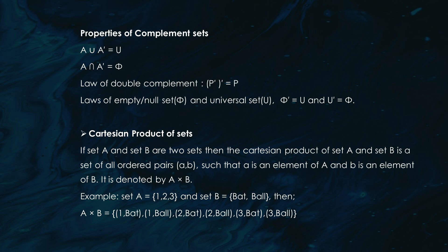Finally, let's talk about the Cartesian product of sets. If you have two sets A and B, the Cartesian product is all the possible ordered pairs you can make by combining an element from A with an element from B. So if set A = {1, 2, 3} and set B = {bat, ball}, then the Cartesian product of A and B = {(1, bat), (1, ball), (2, bat), (2, ball), (3, bat), (3, ball)}. This concept is super useful in areas like coordinate geometry.